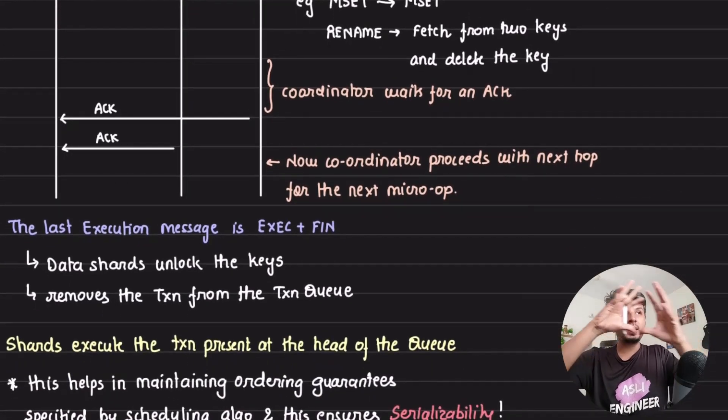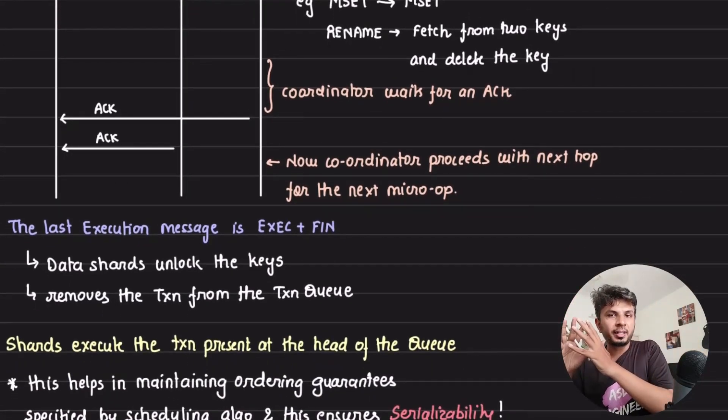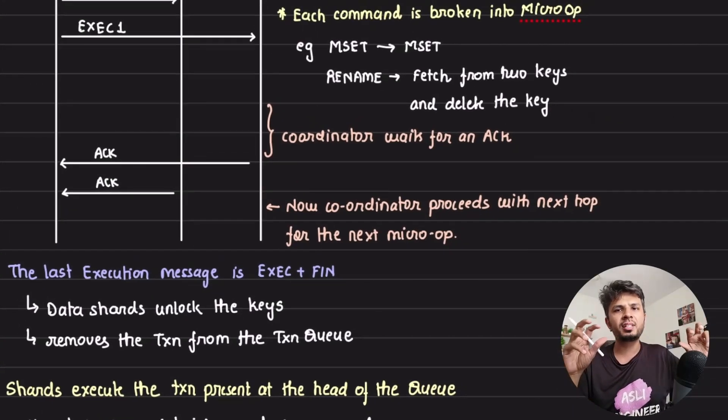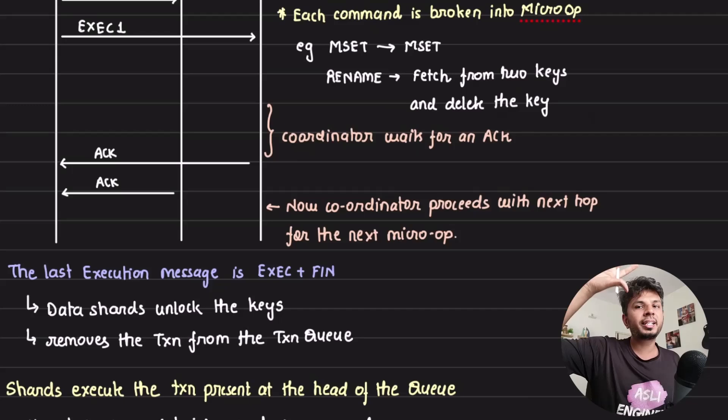This is where your entire execution phase is complete. And in the last execution message, your coordinator sends exec plus fin (fin is finish), exec plus fin message. At that time, any locks that were taken on that key are released and it removes the transaction from the transaction queue, marking it as complete.